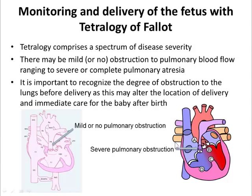It's important to know how much blood flow will be going to the lungs at the time of delivery, because this may alter where we want to deliver the baby and what we need to do immediately after birth. For families whose baby has mild or no pulmonary obstruction, delivery can be local with the local team as the family chooses. But for babies with more severe obstruction, the best quality of care will be for baby to deliver in a cardiac centre or in an obstetric unit adjacent to where the baby can receive their operation.